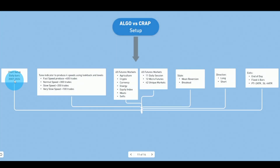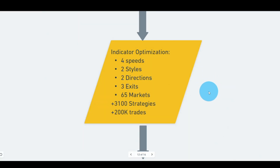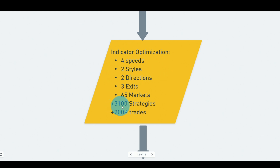So the complete Algo vs Crap setup is: historical bars, indicator speed tuning, 65 markets, two styles, two directions, and three exits. Optimizing all these variables gives us roughly 3,100 strategies and around 200,000 trades. The count is approximate because the speed tuning isn't exact — the target of 100 trades might yield 95, 110, or 140 in practice.